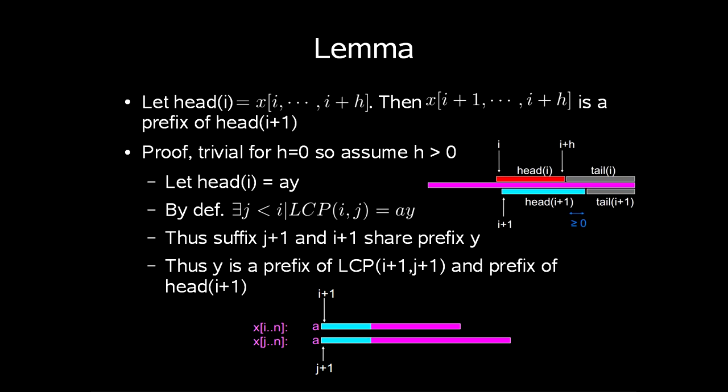To prove this, we start with the base case of h being 0. This is trivial because it would be head(i) followed by the empty string. So now assume h larger than 0. Let head(i) equal ay, so the letter a followed by a string y. By definition, there exists a j less than i such that the longest common prefix of i,j is equal to ay. Thus suffix j+1 and i+1 share the prefix y.